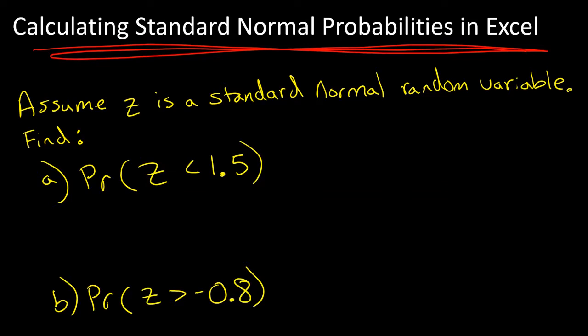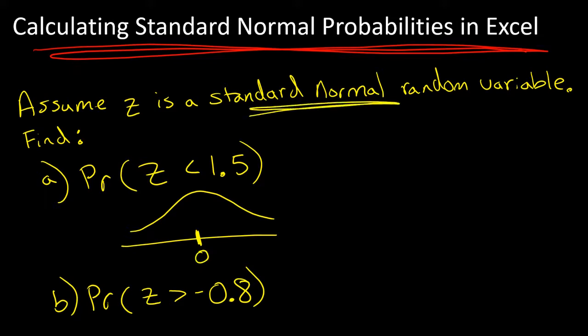Assume z is a standard normal random variable. First, how do we find the probability that z is less than 1.5? Basically, if we draw out this distribution, in the center of a standard normal distribution you always have zero. Standard normal means mu equals zero and sigma equals one.